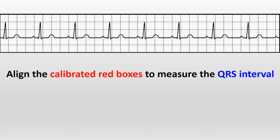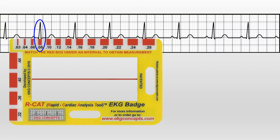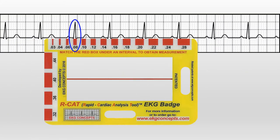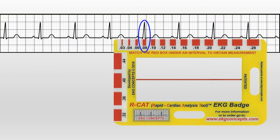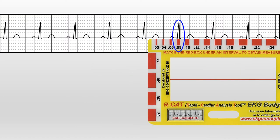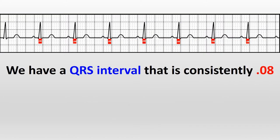Now align the calibrated red boxes to measure the QRS interval. We have a QRS interval that's consistently 0.08.